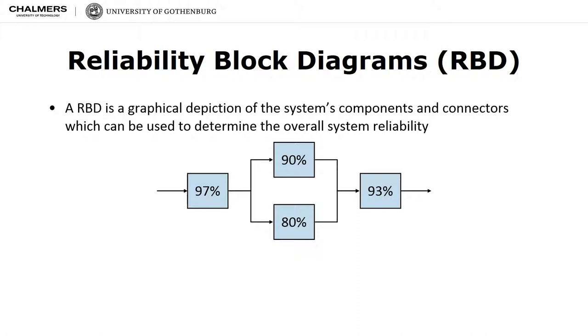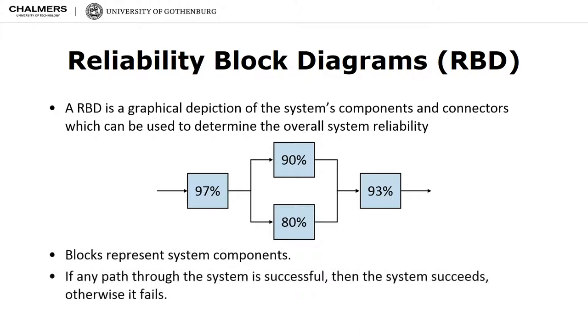An RBD can have one or more paths through it which represent successful operation. Blocks represent system components. The diagram shows which paths through the blocks are essential to success. If any path from left to right is executed successfully, then the overall system is set to succeed. Otherwise, if all paths fail, then the system fails.